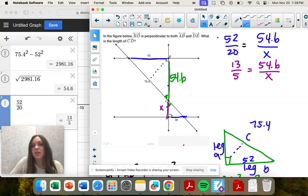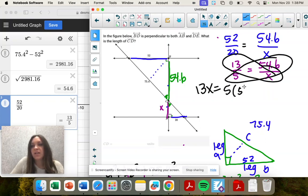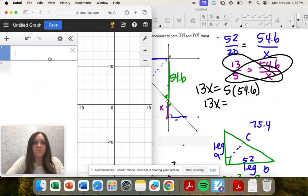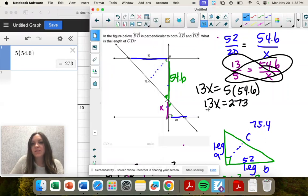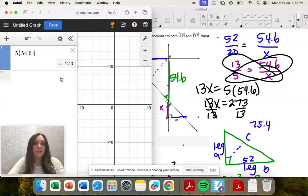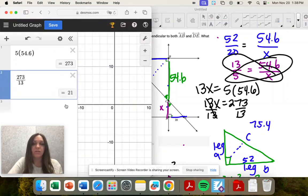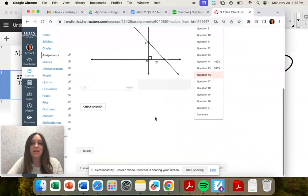And now we're going to cross-multiply. So 13X equals 5 times 54.6, which is 273. Divide both sides by 13, and that's going to give us our value. So this one took a little longer, and we had to remember the Pythagorean Theorem. So that is 21.